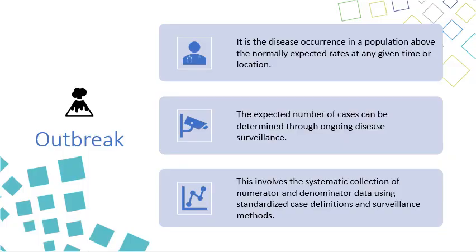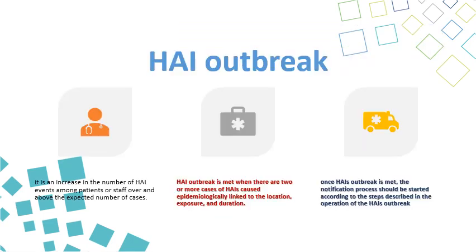Outbreak definition: An outbreak is a disease occurrence in a population above the normally expected rate at any given time or location. The expected number of cases can be determined through ongoing disease surveillance, involving systematic collection of numerator and denominator data using standardized case definitions and surveillance methods. Hospital-acquired infection outbreak means an increased number of HAI events among patients or staff above the expected number of cases.